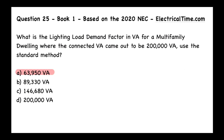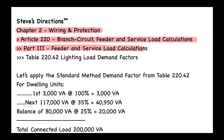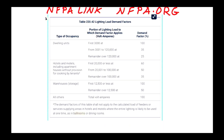The answer is A, and that's going to be 63,950 VA. The first question we ask ourselves is what article are we talking about for this load calculation? That is Article 220, called Branch-Circuit, Feeder and Service Load Calculations, within Chapter 2, Wiring and Protection. Then we find Part 3, Feeder and Service Load Calculations, and Table 220.42, Lighting Load Demand Factors.